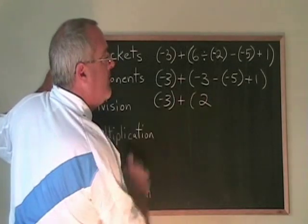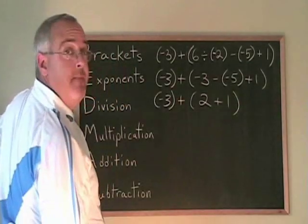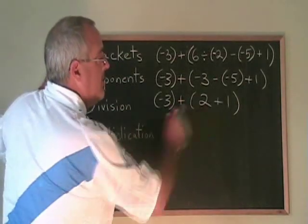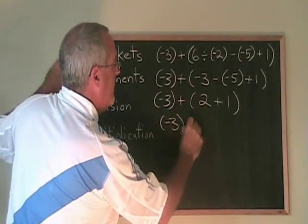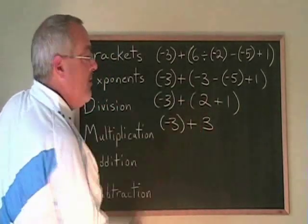So we write the answer positive 2, and then we copy down the plus 1 and close our bracket. Now we just have a 2 plus 1 in the bracket. 2 plus 1 is 3. I write the answer. I don't need the bracket anymore.